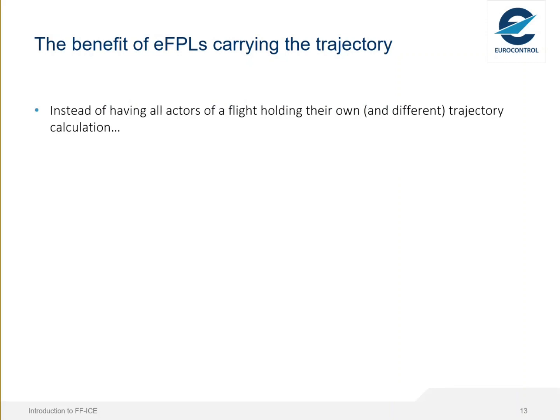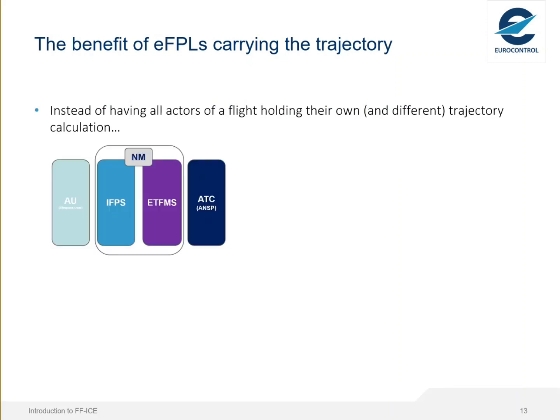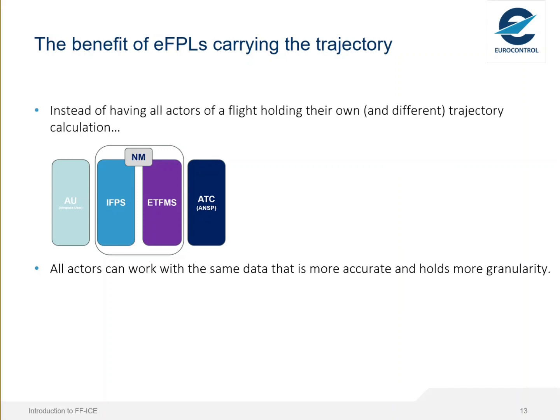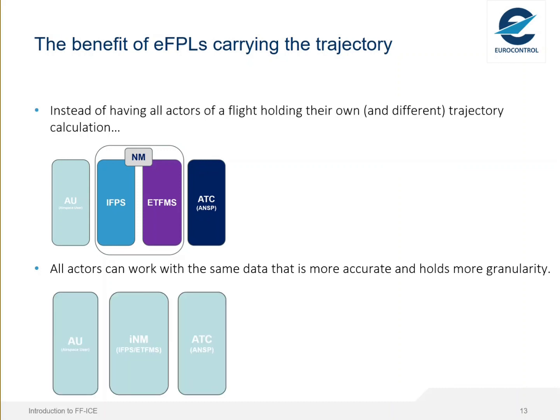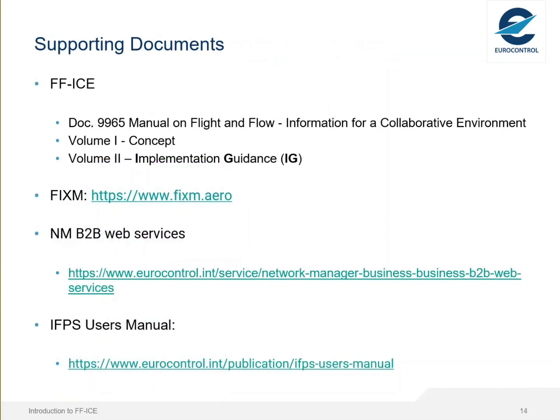One of the benefits of FF-ICE and eFPL is that instead of having different actors holding different trajectories, all actors work with the same data — more accurate and with more granularity. Finally, here is a non-exhaustive list of useful documents, starting with ICAO documentation, followed by FIXM, the NMB2B services, and the IFPS Users Manual. Thank you for watching.